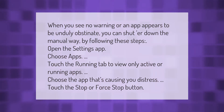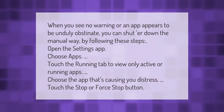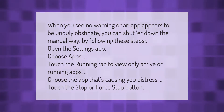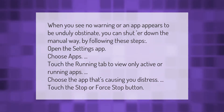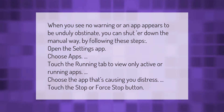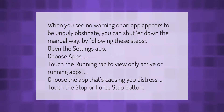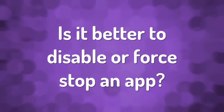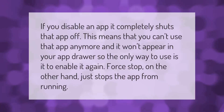When you see no warning or an app appears to be unduly obstinate, you can shut it down the manual way by following these steps: open the Settings app, choose Apps, touch the Running tab to view only active or running apps, choose the app that's causing you distress, and touch the Stop or Force Stop button.